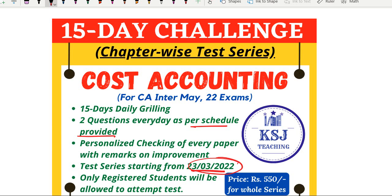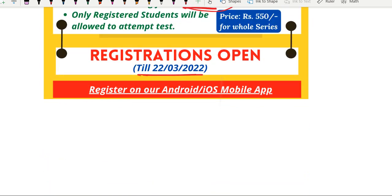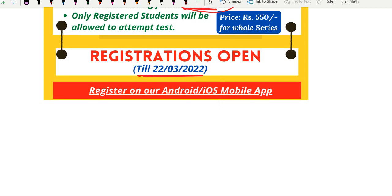You have to attempt the paper as you would in your examination, without referring to any other materials — just as if you are sitting in an examination hall. After you have attempted the paper, you have to prepare a PDF file of your answer sheet and send it to our email ID. The email ID is ksjtestseries@gmail.com. Do not send it to ksjteachingatgmail.com — if you send it there, your paper will not be checked.